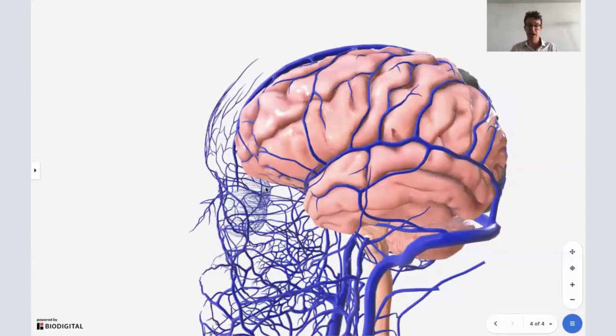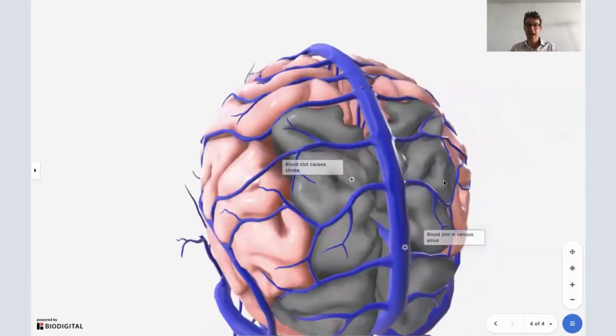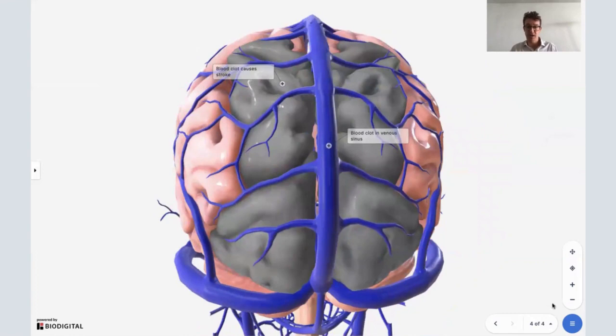So here we have the brain. This is the front of the head. This is the back of the head. And you'll see here, this is one of the venous sinuses.